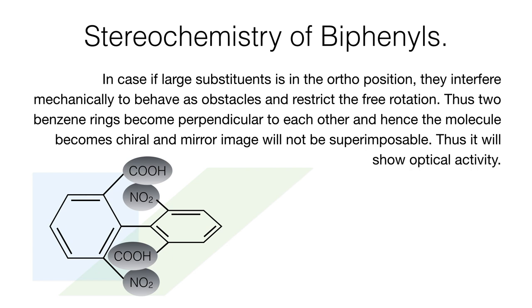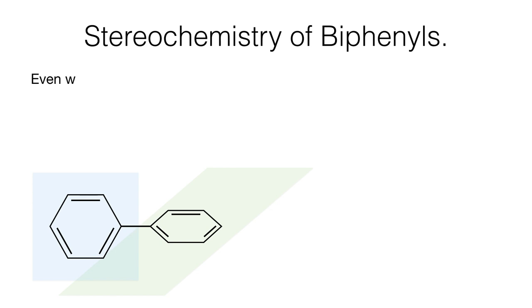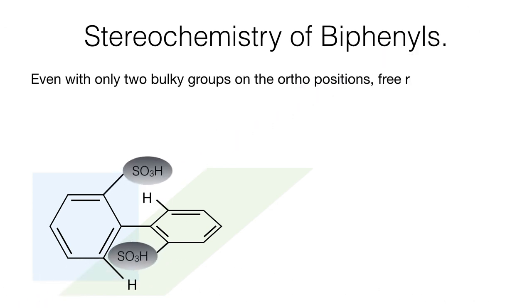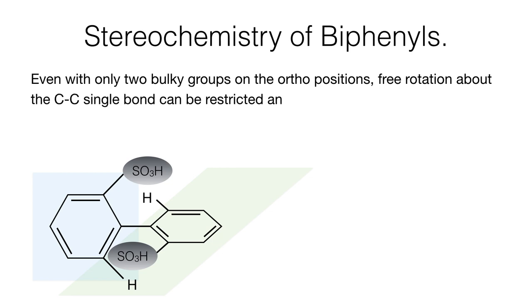For example, here the COOH group and NO2 group in the ortho position are bulky groups, and because of them the free rotation about the carbon-carbon single bond is restricted. So the two benzene rings make themselves perpendicular to each other. Even with only two bulky groups on the ortho positions, free rotation about the carbon-carbon single bond can be restricted and thus the compound becomes optically active.